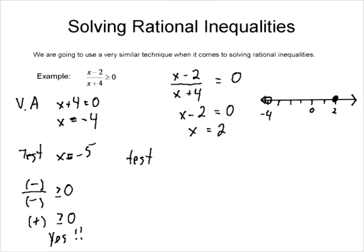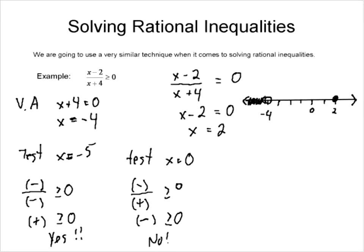Let's test a point in between — x equals 0. If we put 0 in the numerator, we get a negative value. If we put 0 in the denominator, we get a positive value. A negative divided by a positive gives a negative value. Is a negative greater than or equal to zero? No, it's not. So the numbers between negative 4 and 2 are not included; we shade that region out.